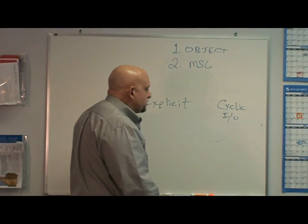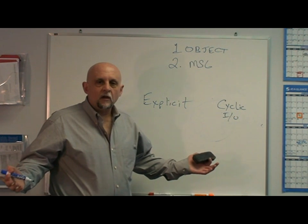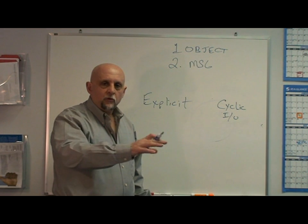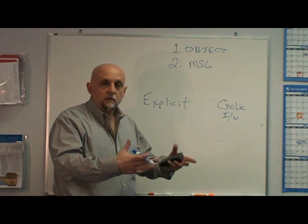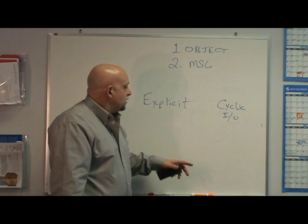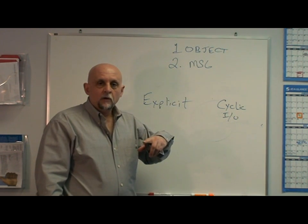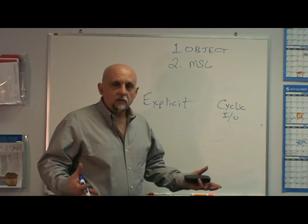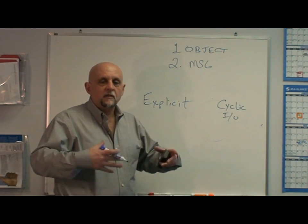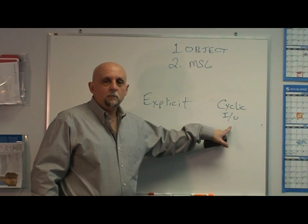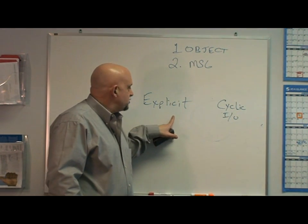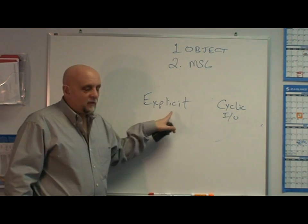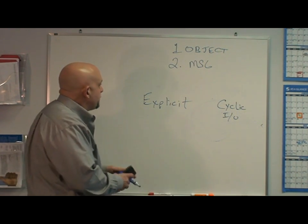An I/O message, on the other hand, is just bits. Both sides have to understand the contents of those bits. The PLC sends outputs out to the device, the device knows what every bit in that packet means. The device sends data back to the PLC, and the PLC knows what every bit means. There's no header information, nothing to indicate what that data is — they both mutually understand it. It's also called implicit data, to distinguish it from explicit data. Those two message types are the second thing you have to know.